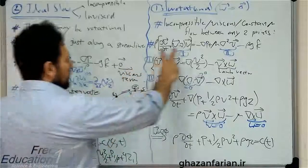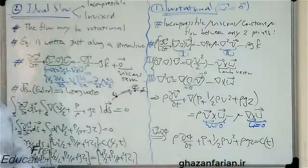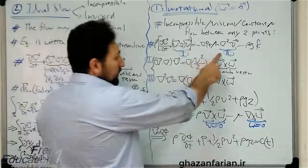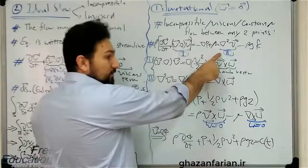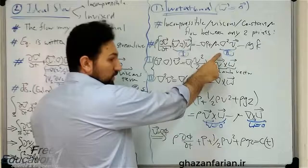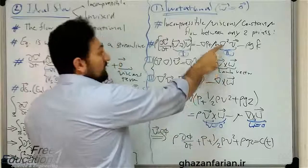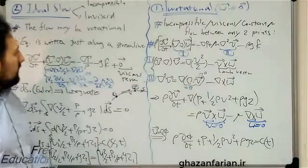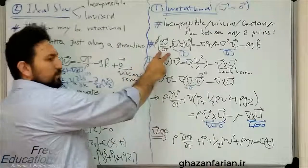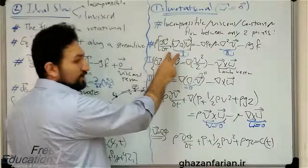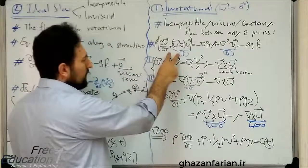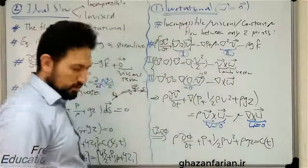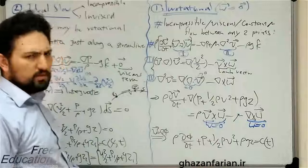Let's start from the Navier-Stokes equation. You can see that the viscous term is included, so the flow is viscous. The terms are: the local derivative or local acceleration, the nonlinear advection term, the pressure term, the viscous term, and the gravity force or volumetric source term.